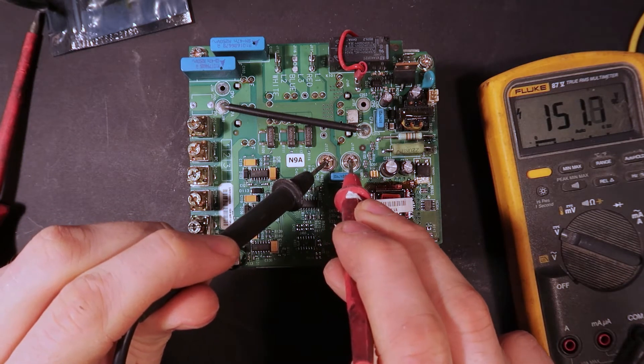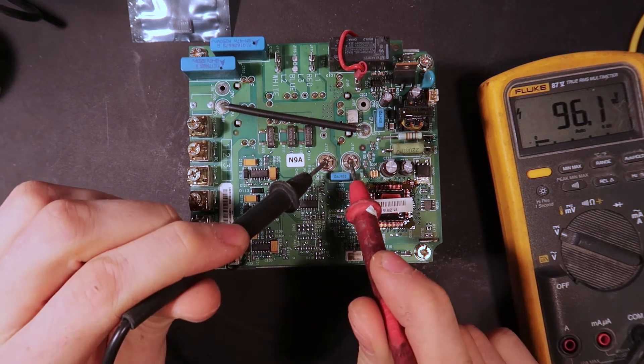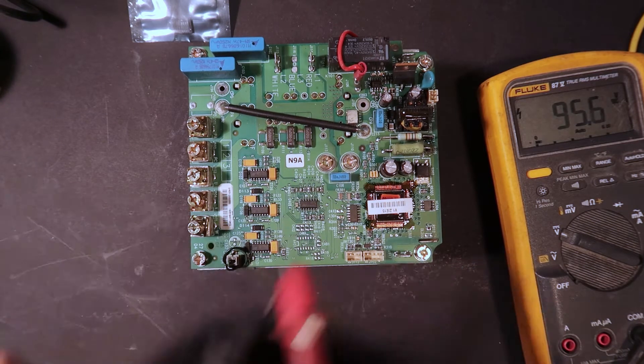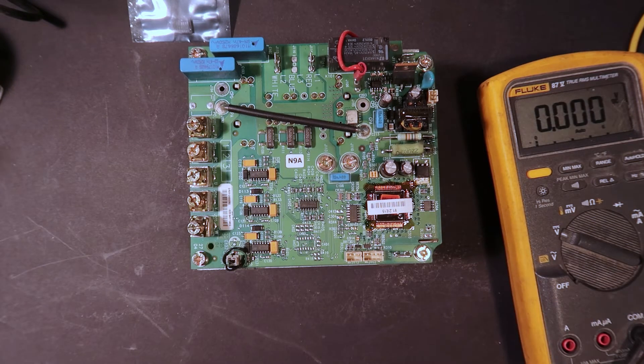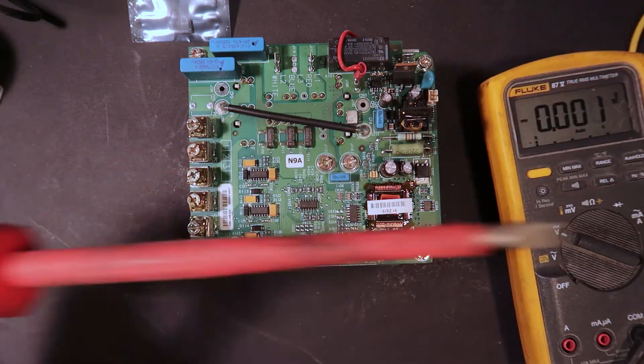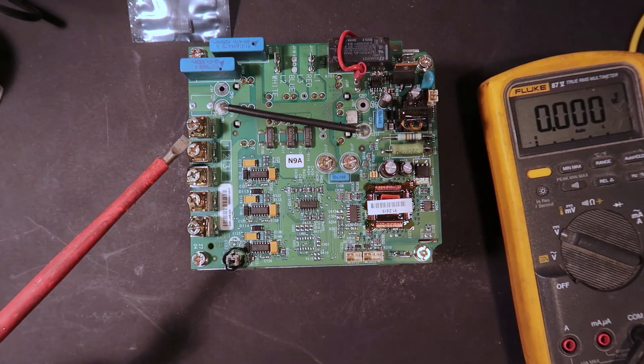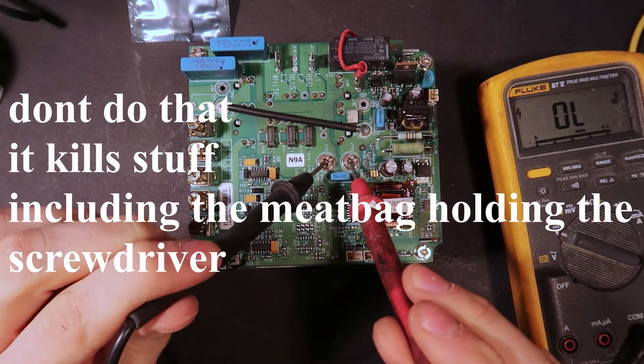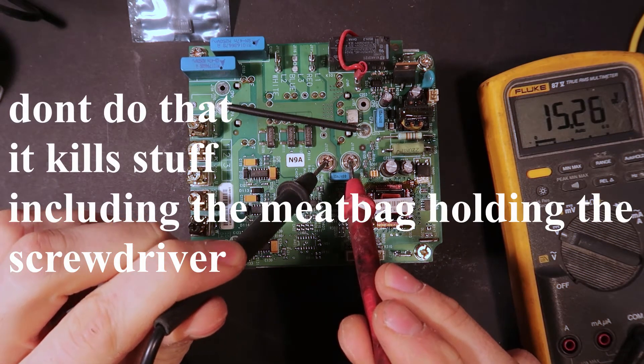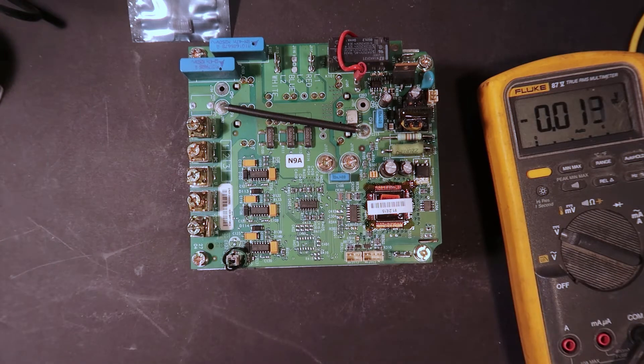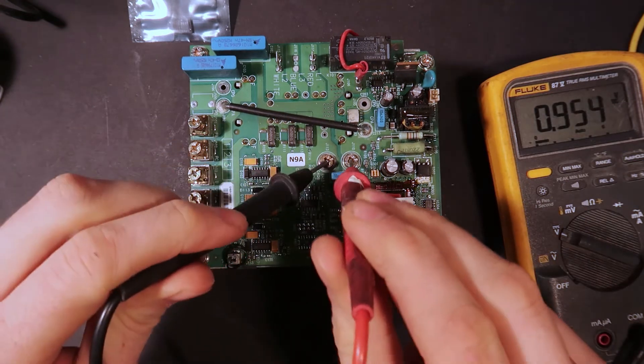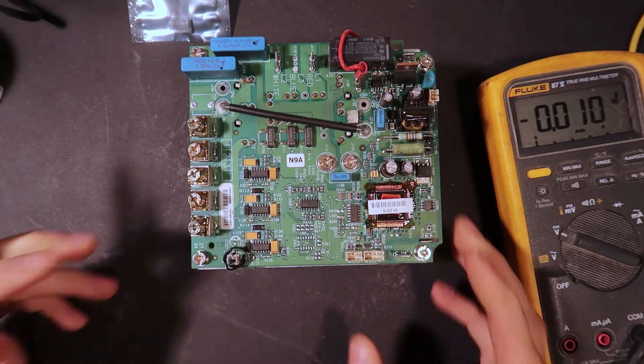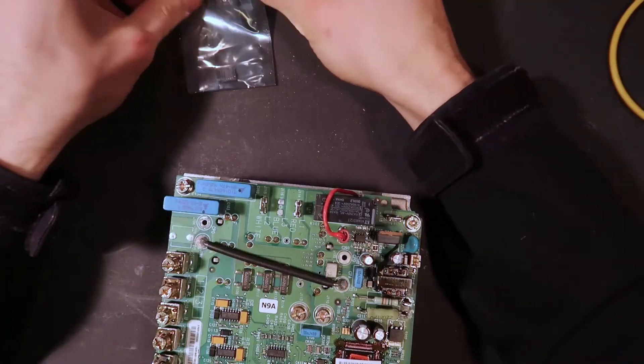152 volts DC. Another couple minutes went by, we're at 95 volts DC. So we take our little electrical screwdriver here and let's just zap that out. It was a bit more violent than I expected. 15 volts. We're basically at zero, so now we can start working.